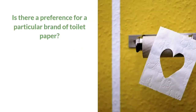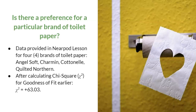This lecture example wants to explore whether there is a preference for a particular brand of toilet paper. The details of this research study are also provided in your video handout. The chi-square for goodness of fit for this example was calculated in the Nearpod lesson. I encourage you to pause the video here and try to do the four steps on your own first, then resume the video to see the answers.